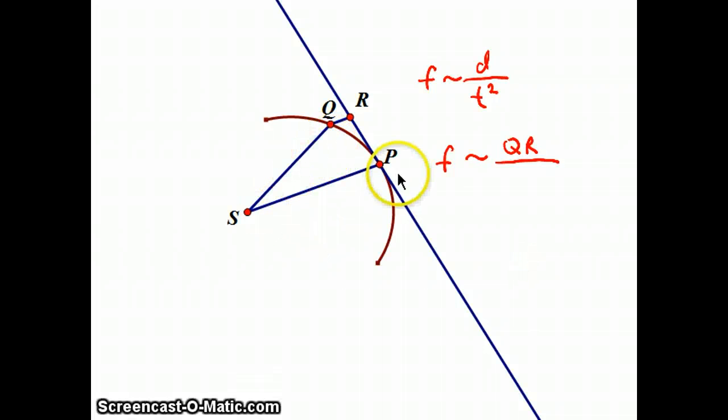So the area of PSQ, which has this arc as its third side. Now, as P gets really close to Q, arc PQ is the same thing as line segment PQ. So we're going to imagine right now they're not that close together, but as they get closer together, the area does become that.